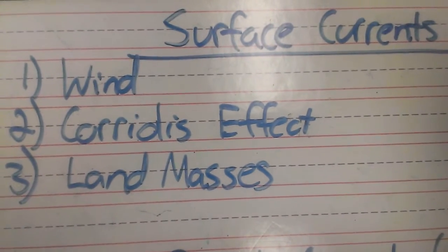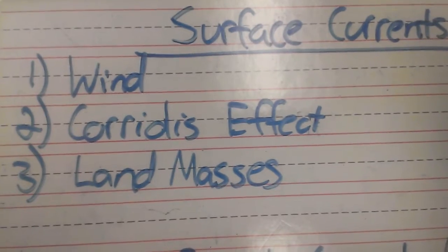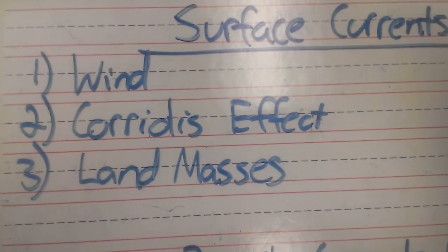Alright, now we're going to talk about currents. Let's start with the surface. Surface currents are affected by three major components: wind, the Coriolis effect, and landmass position.